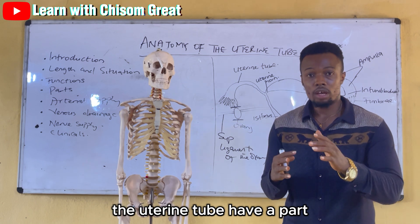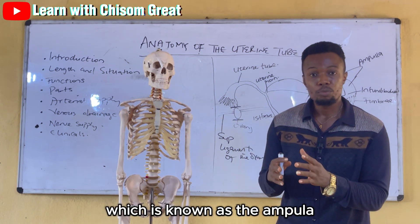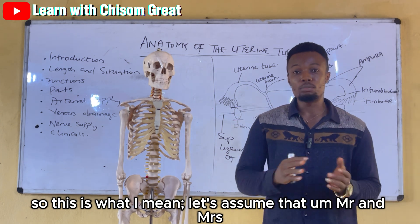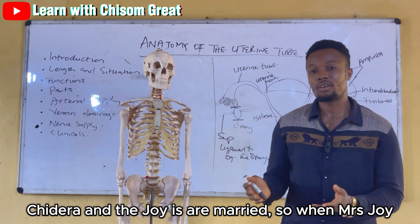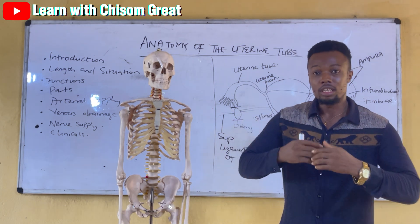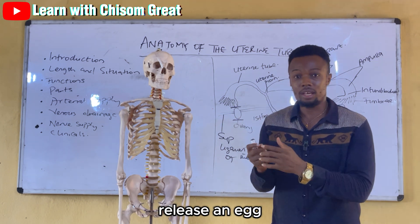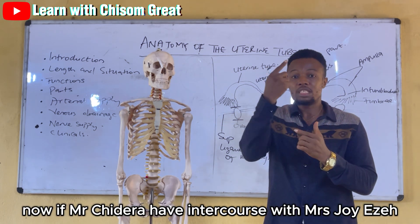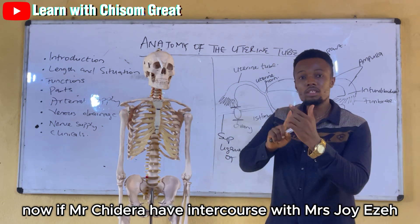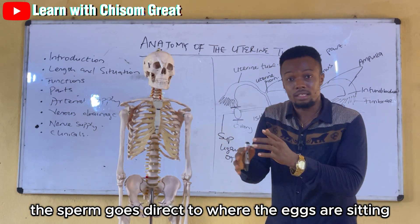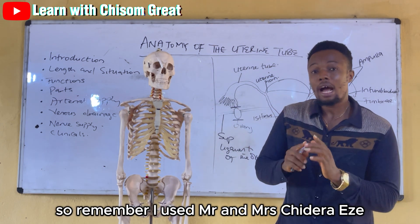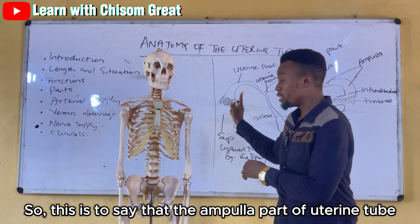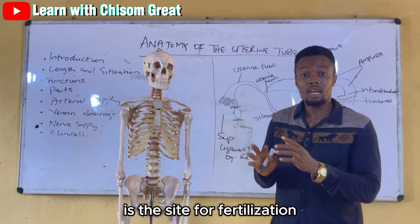Apart from that, the uterine tube has a part which is known as the ampulla, and the ampulla is the site for fertilization. For example, when Mrs. Joy releases an egg, the egg goes to the ampulla part of the uterine tube and waits there. When Mr. Chidera has intercourse with Mrs. Joy, the sperm goes directly to where the egg is sitting and fertilizes it. So the ampulla part of the uterine tube is the site for fertilization.